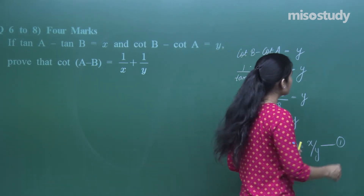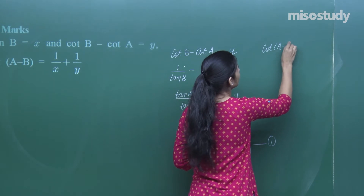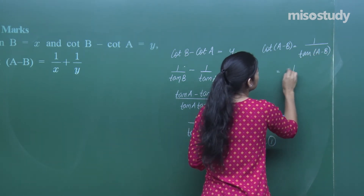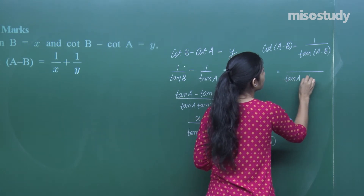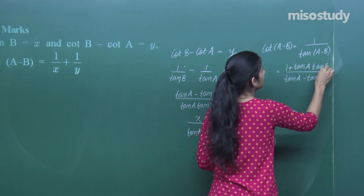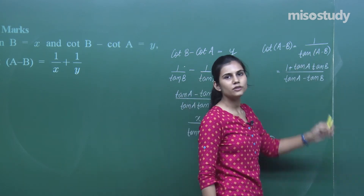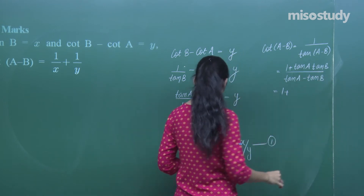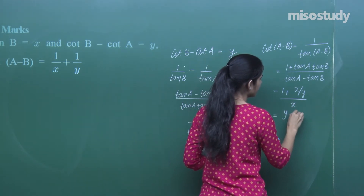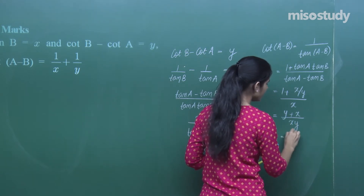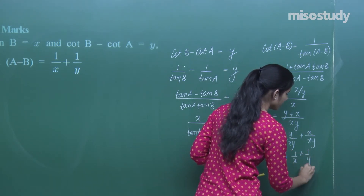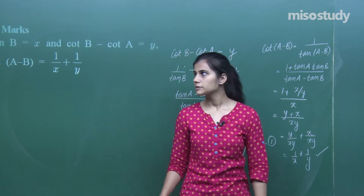Now compute cot(A − B) = 1/tan(A − B). Since tan(A − B) = (tan A − tan B)/(1 + tan A · tan B), we take the reciprocal: cot(A − B) = (1 + tan A · tan B)/(tan A − tan B). Substituting tan A · tan B = x/y and tan A − tan B = x: this becomes (1 + x/y)/x = y/(xy) + x/(xy) = 1/x + 1/y. Hence proved.